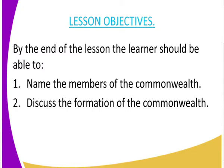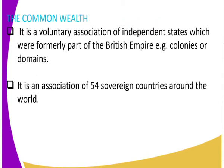What is the Commonwealth? We must understand that this is a voluntary organization of independent states. These states were formerly part of the British Empire — for example, colonies or domains such as Kenya, Uganda, Egypt, and Nigeria. Those are independent states that were formerly part of the British Empire. Commonwealth is an association of 54 sovereign countries around the world. However, more countries are joining the Commonwealth.